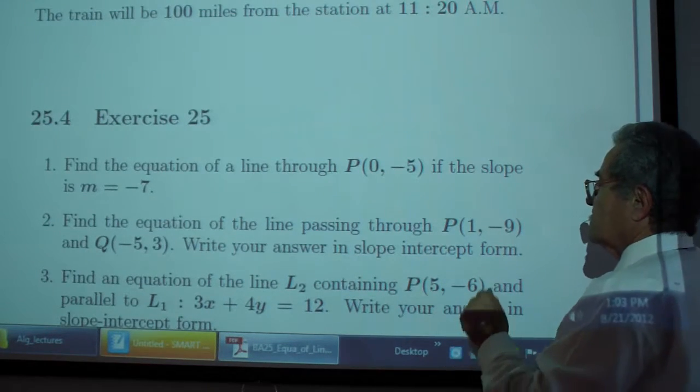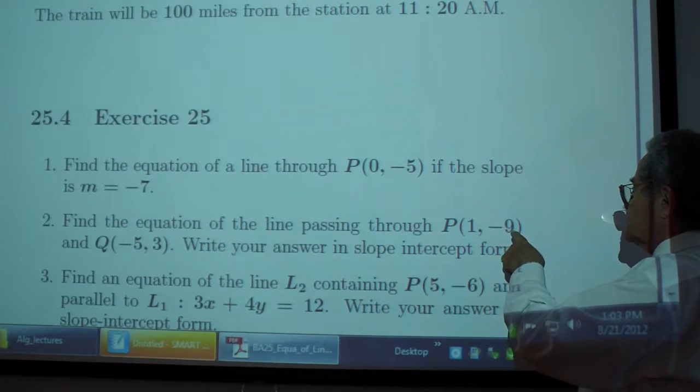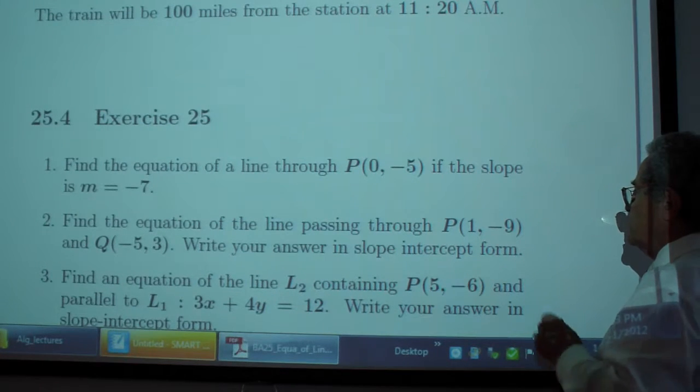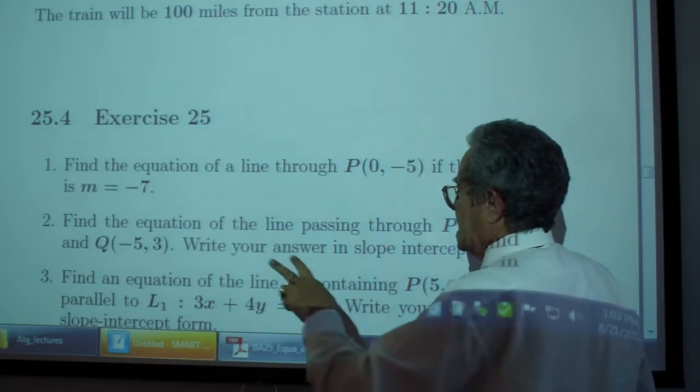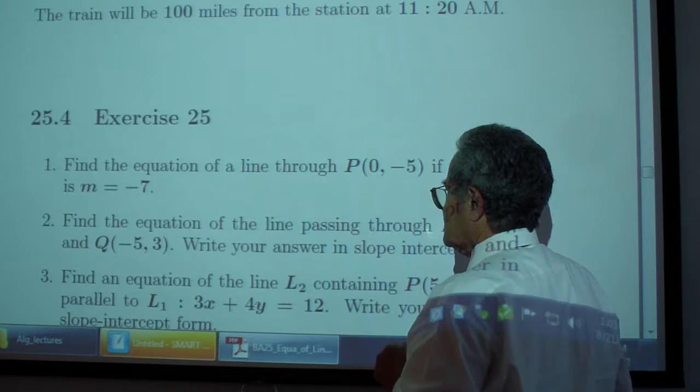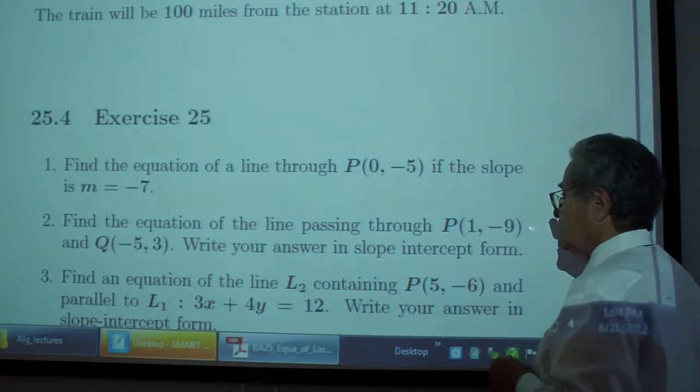Problem 2: Find the equation of the line passing through P₁(1, -9) and Q(-5, 3). Write your answer in slope-intercept form.